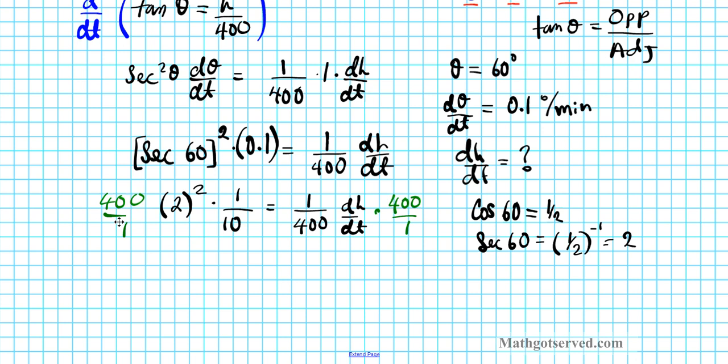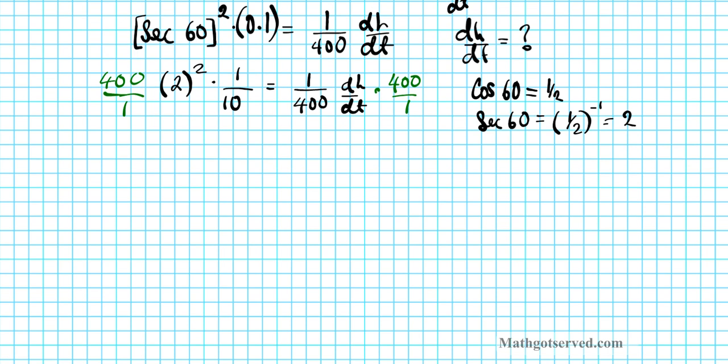That yields... Where did my work go? Okay, there you are. So that yields 400 times 4 times 1 over 10 equals dh/dt. Okay? 4 times 40 is 160. So dh/dt is equal to 160 feet per minute.